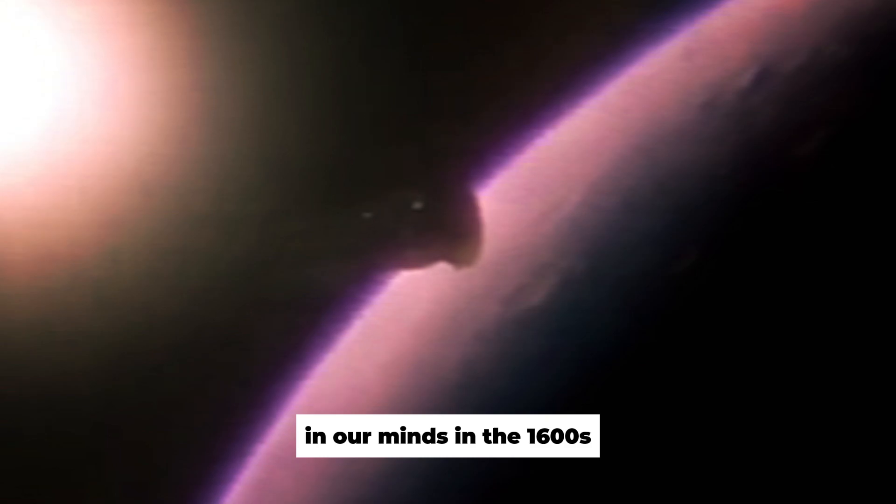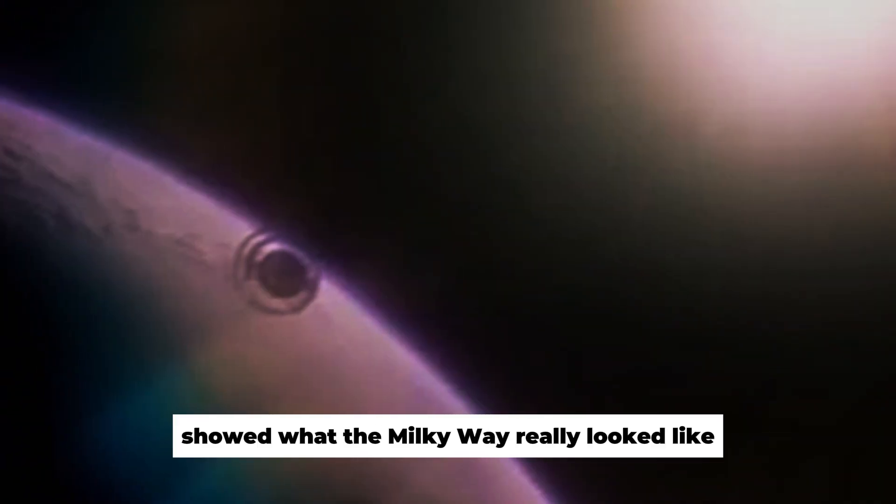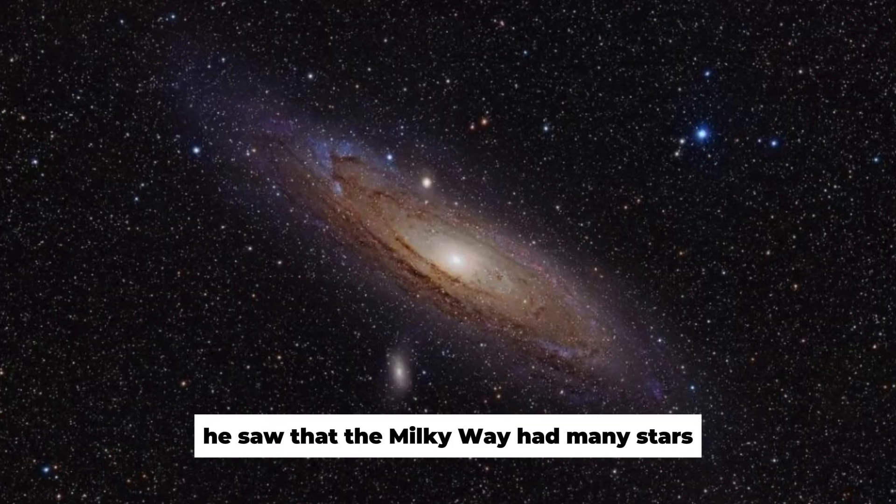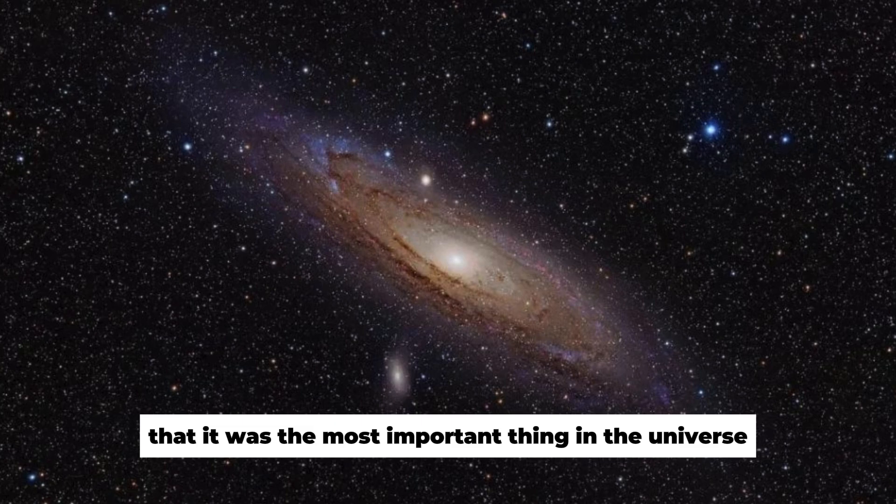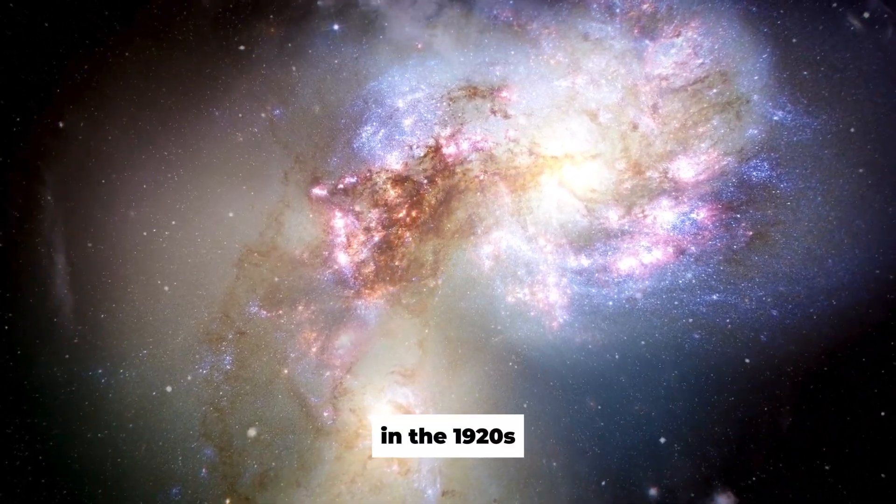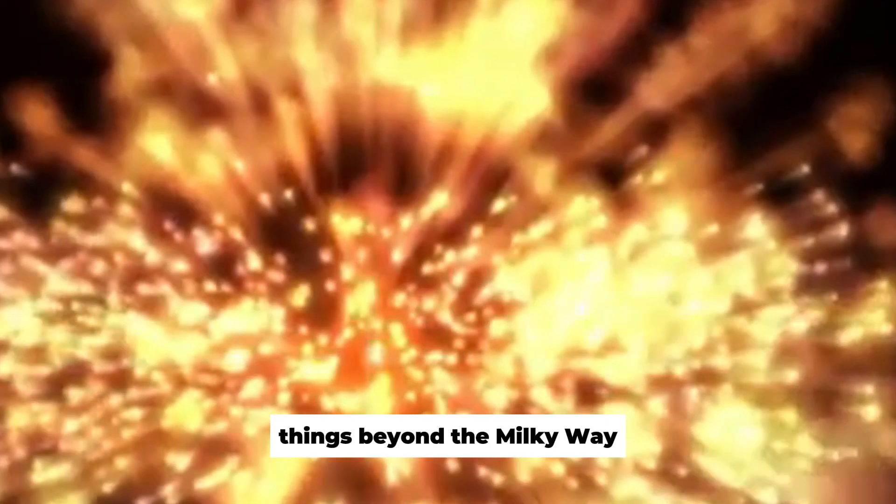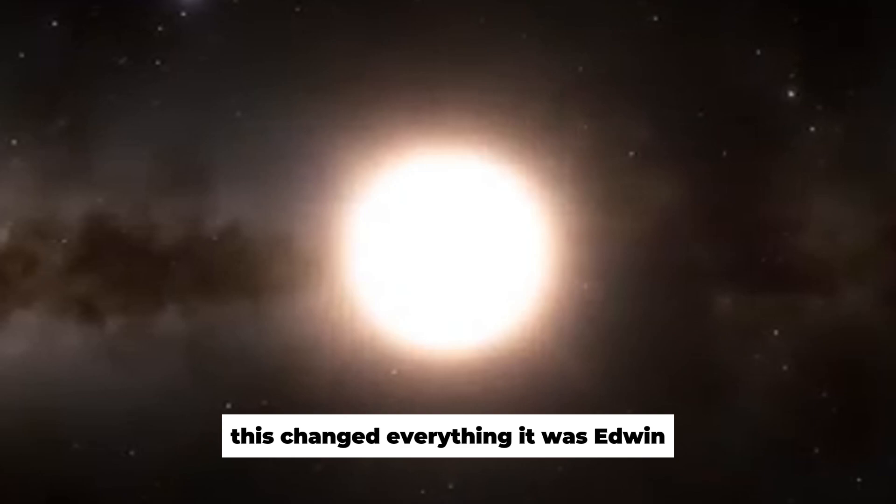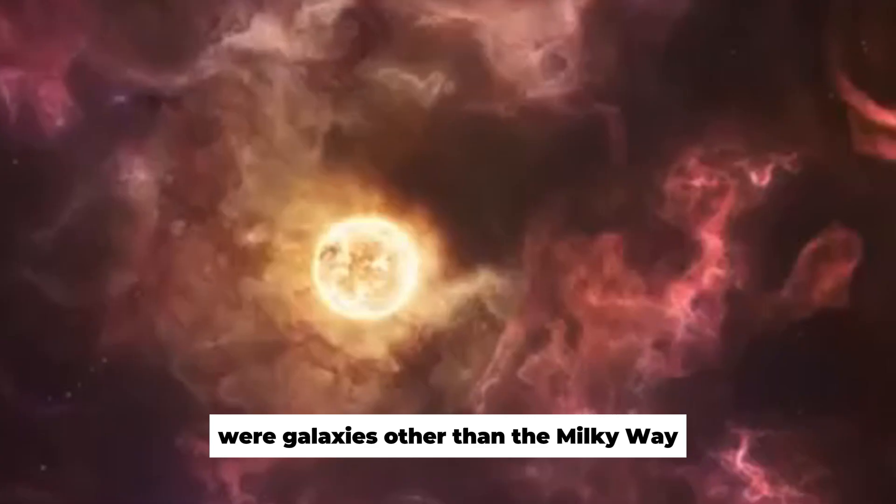In the 1600s, Galileo Galilei's groundbreaking work with binoculars showed what the Milky Way really looked like. He saw that the Milky Way had many stars, which went against the idea that it was the most important thing in the universe. In the 1920s, Edwin Hubble used the Hooker Telescope to find faraway things beyond the Milky Way. This changed everything.